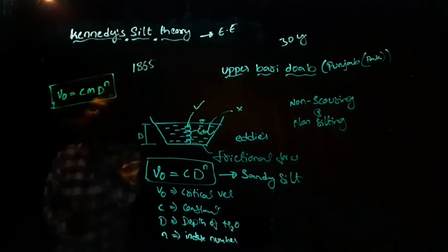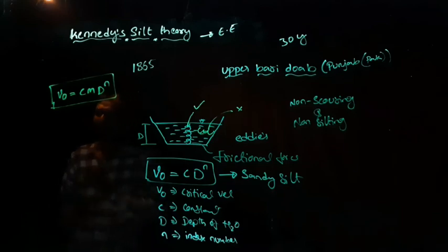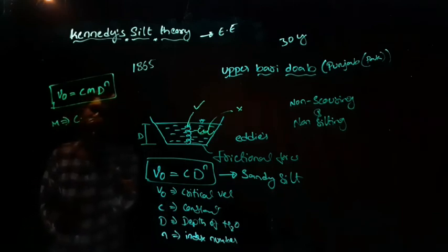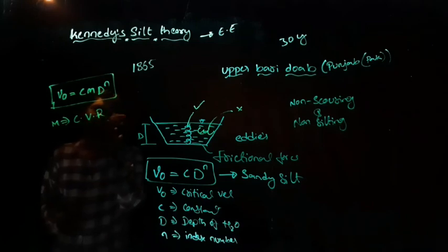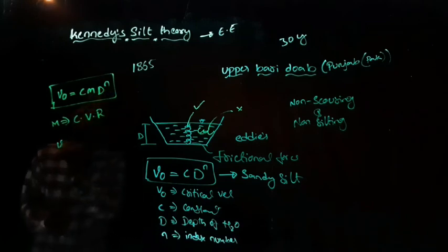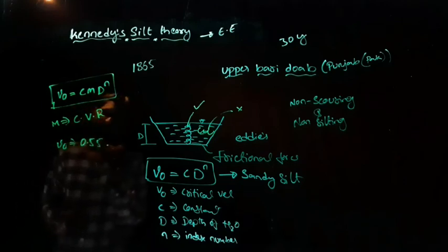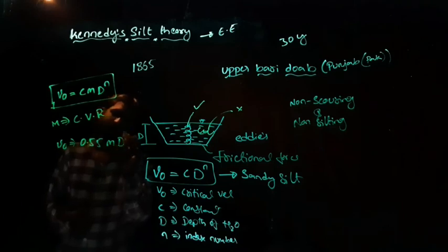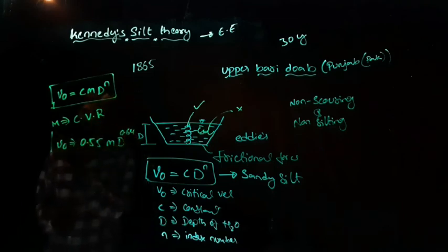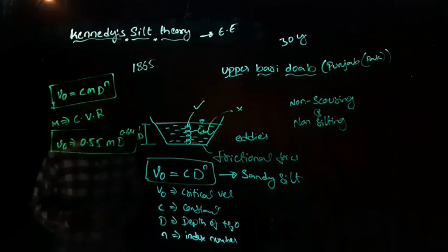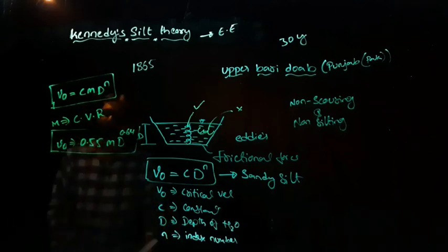He proposed this critical velocity formula where here, m equal to critical velocity ratio. V0 is equal to c can be given as 0.55 into m into d to the power of 0.64. This is the formula for finding out the critical velocity.